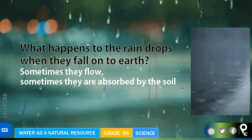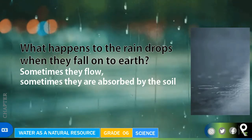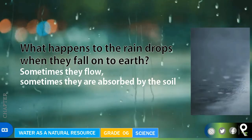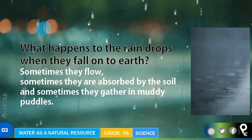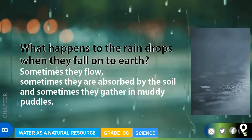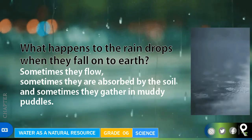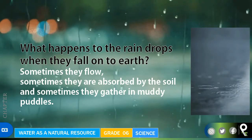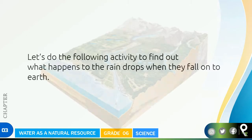When it's raining heavily, some of the water gets absorbed and goes inside the soil. And sometimes water gathers in muddy puddles - naughty children go and jump in those muddy puddles! These are the ways that water gets into the environment. Now let's do the following activity to find out what happens to raindrops when they fall onto the earth.